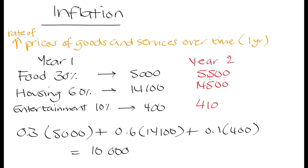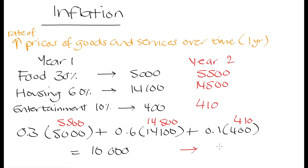So what is going to be the cost of this basket in year two? We can do the same calculation, except we're going to put 5,500 in for food, 14,500 for housing, and 410 for entertainment. If we do that, we are going to get 10,391. So from year one to year two, the cost of this same basket of goods has gone from 10,000 to 10,391.